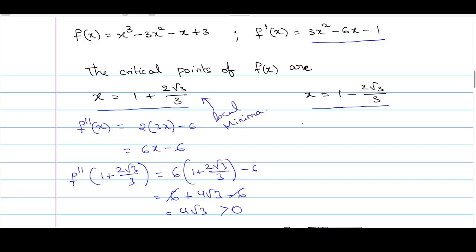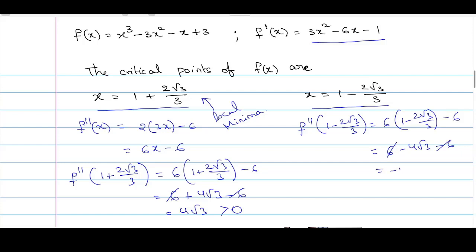Now let us find f''(1 - (2√3)/3). This gives us 6·(1 - (2√3)/3) - 6 = 6 - 4√3 - 6. Again the 6 and -6 cancel, leaving -4√3, which is less than 0. Hence this point is a local maximum.